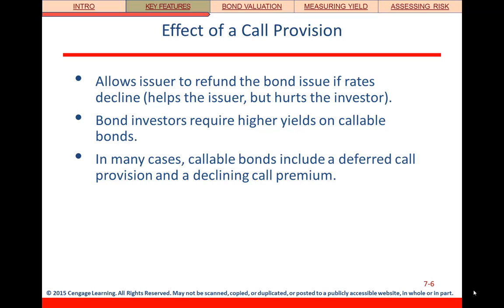What happens if a bond is called early? Having a call provision means the issuer could buy back or pay off those bonds early. Why would they do that? If interest rates go down, they could buy back existing bonds and reissue them at a lower coupon rate, cutting their interest payments. If you're buying a callable bond, you typically want a higher coupon rate, because that stream of coupon payments isn't guaranteed — if rates drop, the issuer could call the bond and you'll have to find another investment.